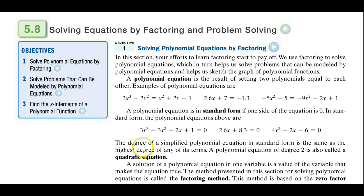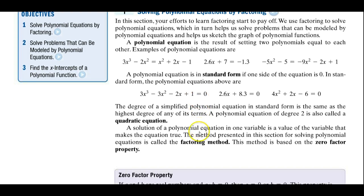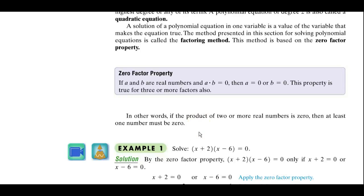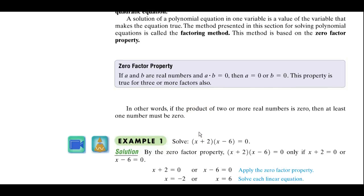We did mention the difference between an expression and an equation. An equation has an equal sign. Well, what we've been doing up to this point, they didn't have it. Now, to do this, we're going to use a technique that's called the zero factor property.